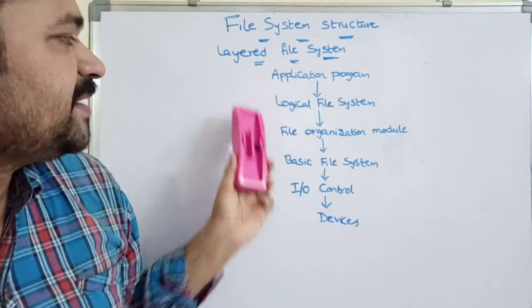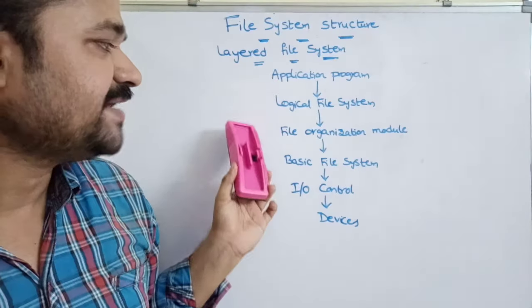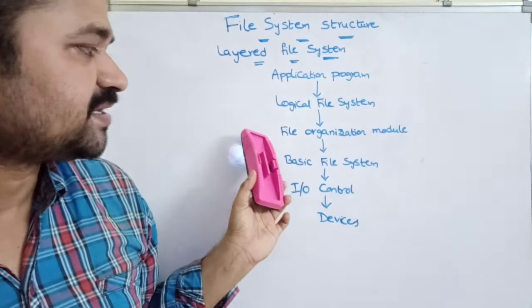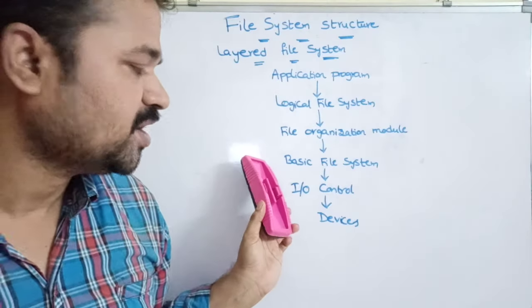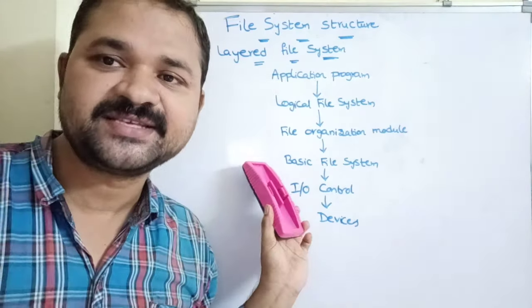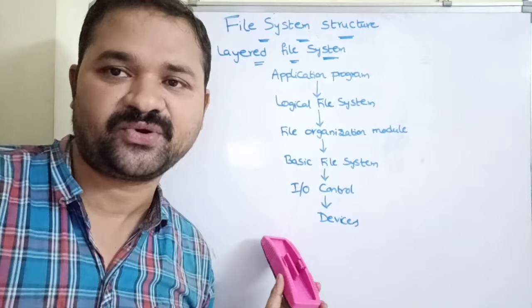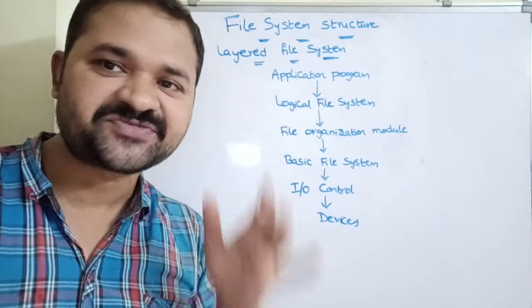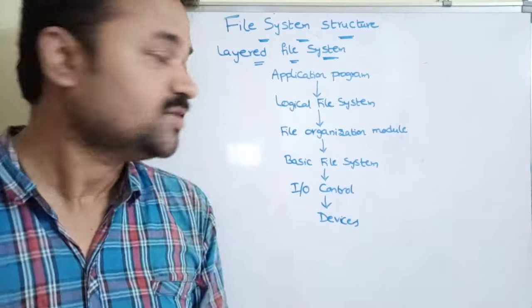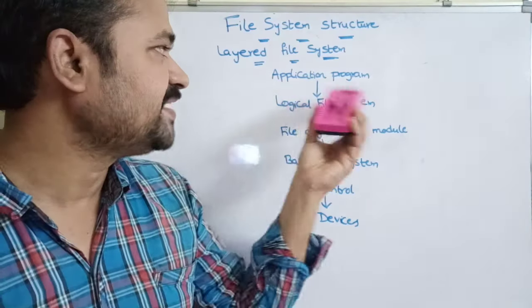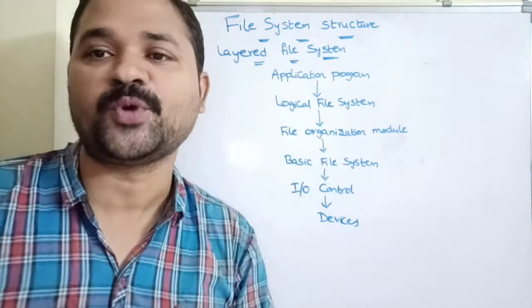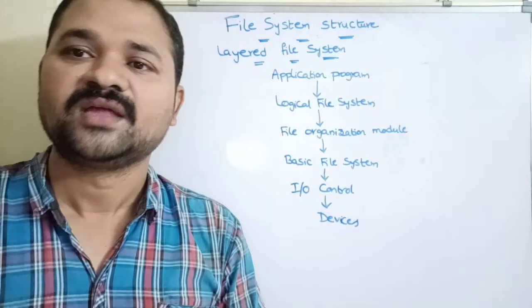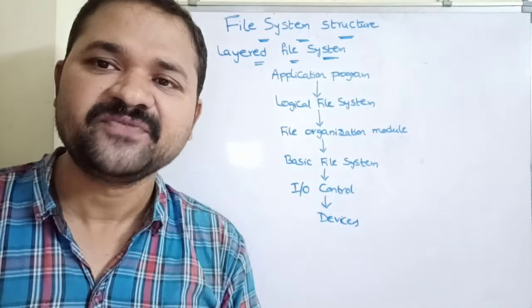In between, we have a logical file system, file organization module, basic file system, and I/O control. Let's see all the layers one by one. The first one is the application program.